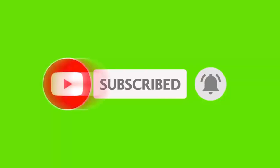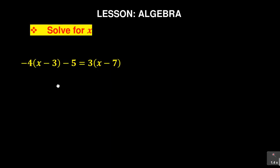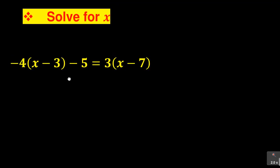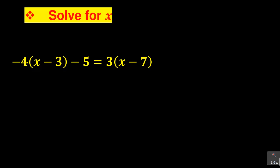I just took a question from one of the previous papers, and this is the question I wanted to share with you. This question says you need to solve for X, and you are given this particular problem. I just want to show you some of the things you can avoid so that your answer is always correct when it comes to solving for X.